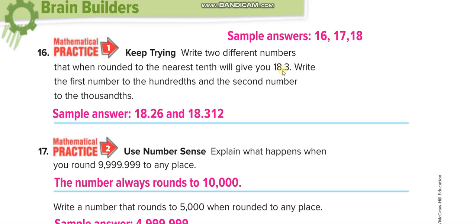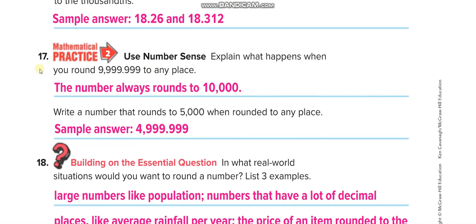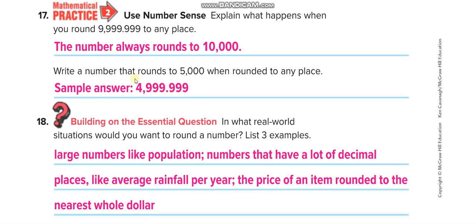Write two different numbers that when rounded to the nearest tenth will give 18.3. The tenths place is this digit, and it will become 18.3 — give me two examples in the comment box. Explain what happens when you round a number to any place: you add one and the remaining become zeros, so it becomes 10,000. Write a number that rounds to five thousand when rounded to any place.